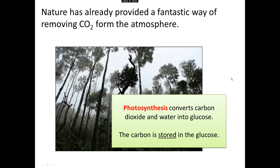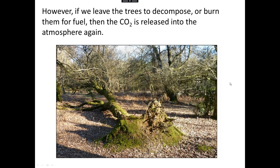Nature has already provided the best way of removing carbon dioxide from the atmosphere, and that is through plants. Every single plant does photosynthesis, converting carbon dioxide and water into glucose and oxygen. The carbon gets stored in the glucose — glucose is a carbohydrate — so the carbon from the carbon dioxide ends up in the glucose instead of in the atmosphere. But if we then leave those trees, if we plant loads of forests and then just leave them, eventually the trees get old and start to decompose. Or we cut them down and burn them as fuel, and either way the carbon dioxide gets released back into the atmosphere again. So trees do take carbon dioxide out of the atmosphere, but it can be temporary.